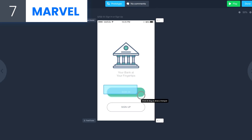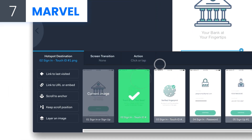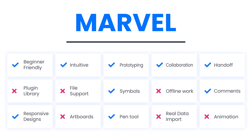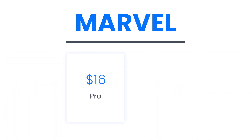Number 7: Marvel App. Marvel App is a great option for beginners and simple prototypes. It's made to be intuitive and easy to work with, and works on the web browser. It's perfect for fast and simple prototypes and is very intuitive with a great handoff feature. The disadvantages are that it doesn't work offline and it's not ideal for animation. The price is $16 a month for Pro, but there is a free option.